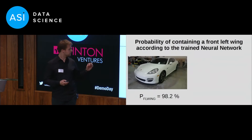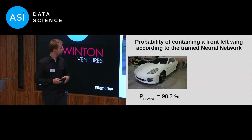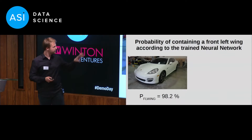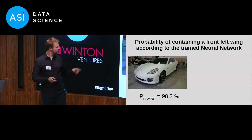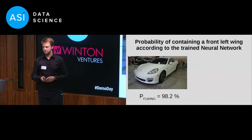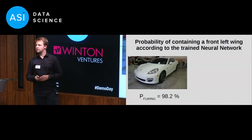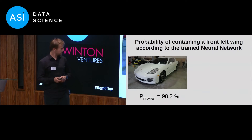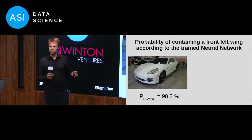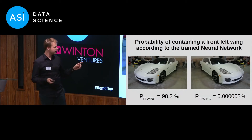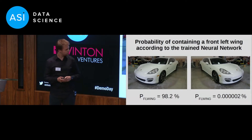So let me show you an example. This image, which as you will all agree contains a front left wing in the middle, if run through our classifier yields a very good result of more than 98%. Now you might be wondering, as I did, are we actually able to distinguish left and right? We can figure this out by mirroring the image, running it again, and yes, the probability drops to almost 0%.